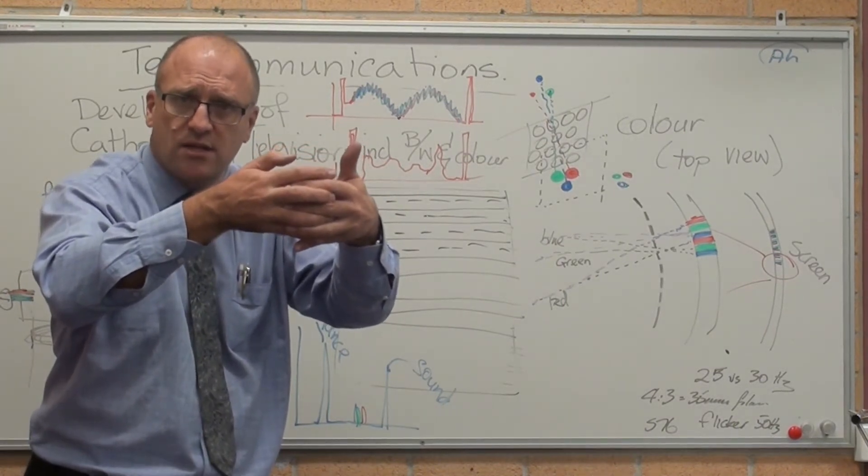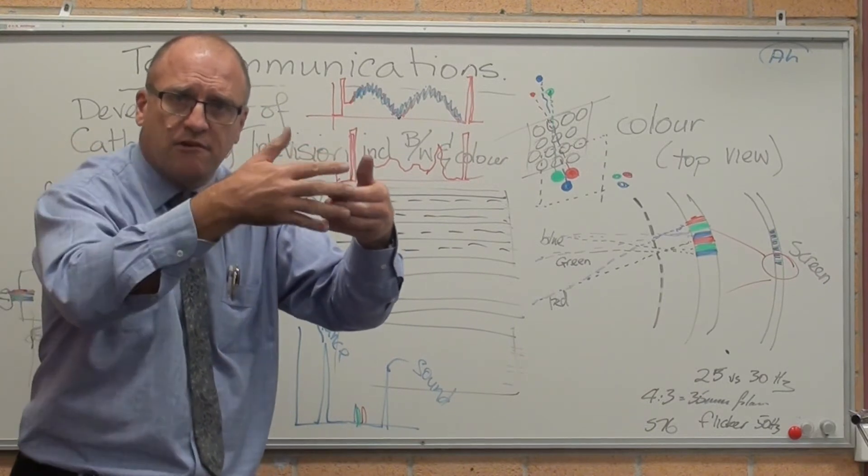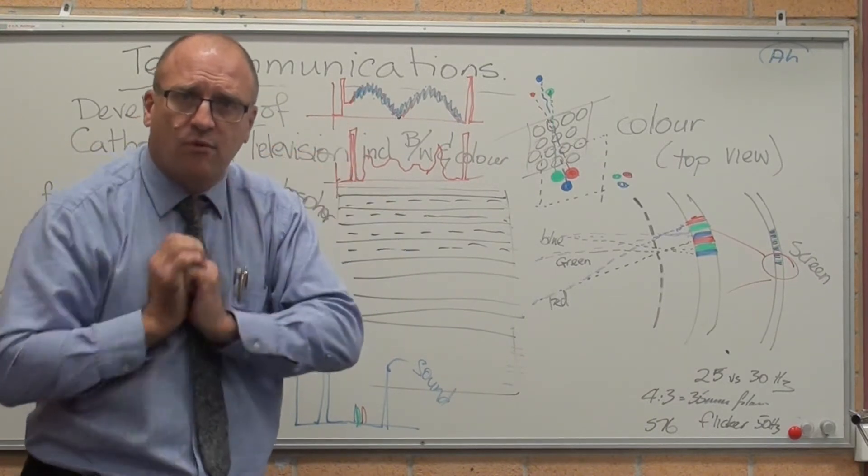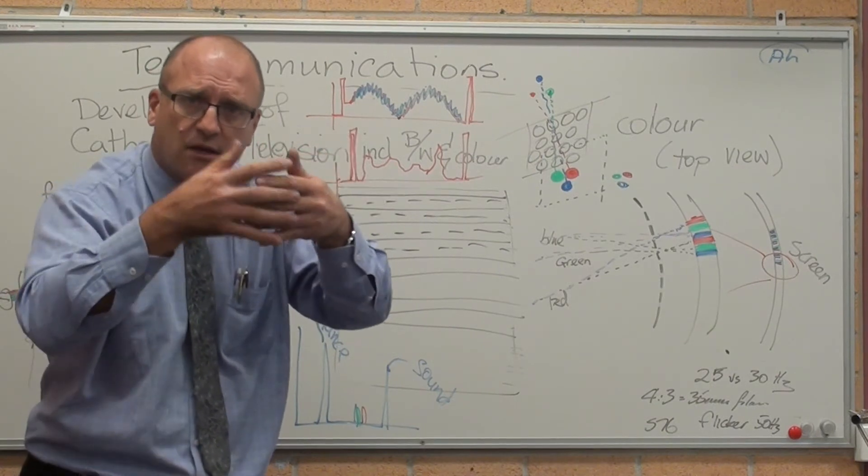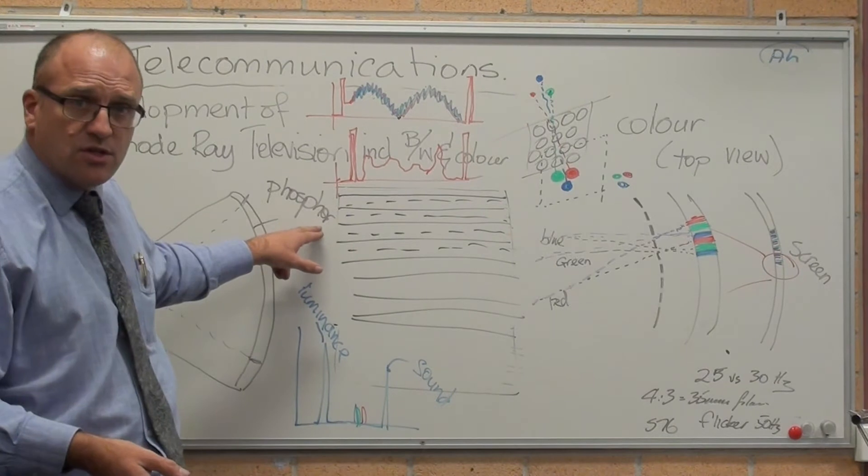So you're still only seeing 25 frames a second, but when they transmitted, they transmitted one-half, one-half, one frame. One-half, one-half, second. One-half, one-half, third frame. That was black-and-white television.